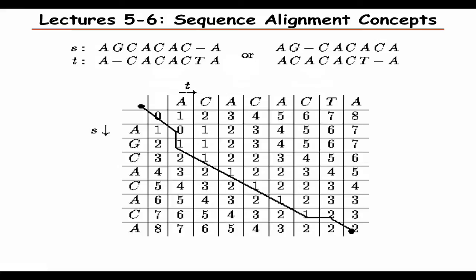Then there will be two lectures on sequence alignment. This is very commonly done in bioinformatics — you have two sequences, for example two nucleotide sequences or two protein sequences, and you want to find the best alignment between them, allowing for insertions and deletions. There are several very good methods to do this, and Stuart is going to lead you through those in more detail.